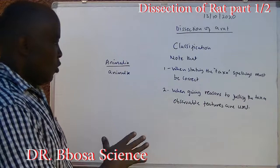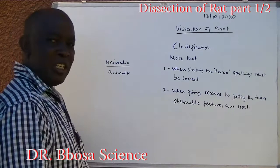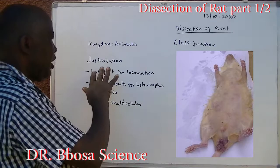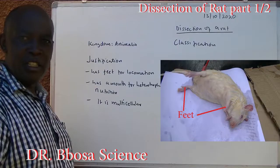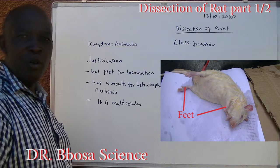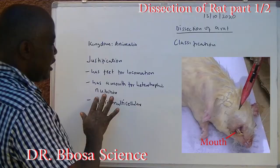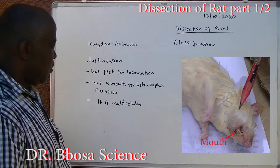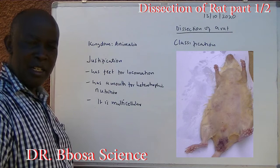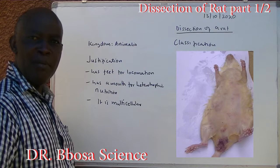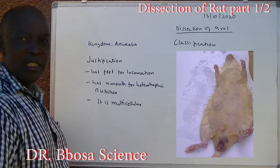When giving reasons to justify the taxa, observable features are used. Kingdom Animalia justification: one, it has feet for locomotion — animals move about to look for food and mates. Two, it has a mouth for heterotrophic nutrition, which distinguishes it from plants that make their own food. Three, it is multicellular, distinguishing it from microorganisms like amoeba that are heterotrophic and move from one place to another.